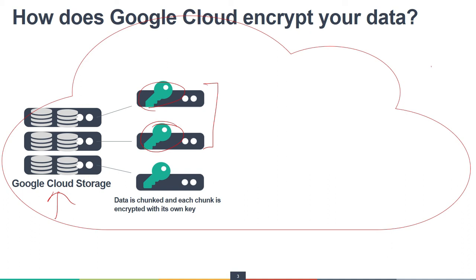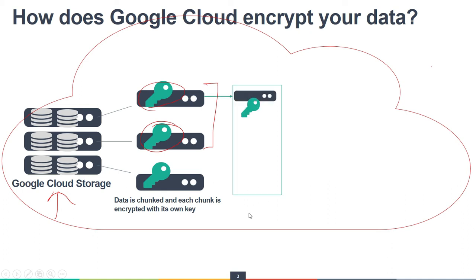Google encrypts the data prior to it being written to disk. The encryption is inherent in all of Google's storage systems rather than added on afterward. Each data chunk has a unique identifier, and access control lists are applied to ensure that each data chunk can be decrypted only by Google services operating under authorized roles. This prevents access to the data without authorization and strengthens both security and privacy. Each chunk is going to have a unique identifier so it can be segregated to different storage infrastructure.